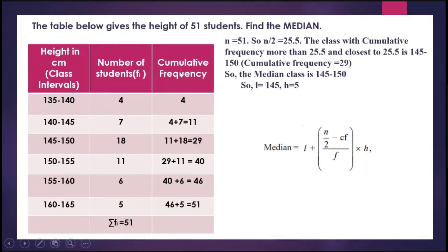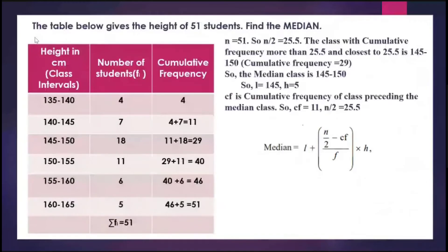CF is the cumulative frequency of the class preceding the median class. The median class was 145 to 150, and the class preceding it is 140 to 145. The cumulative frequency corresponding to that is 11, so CF equals 11. F is the frequency of the median class. The median class is 145 to 150, so F equals 18.